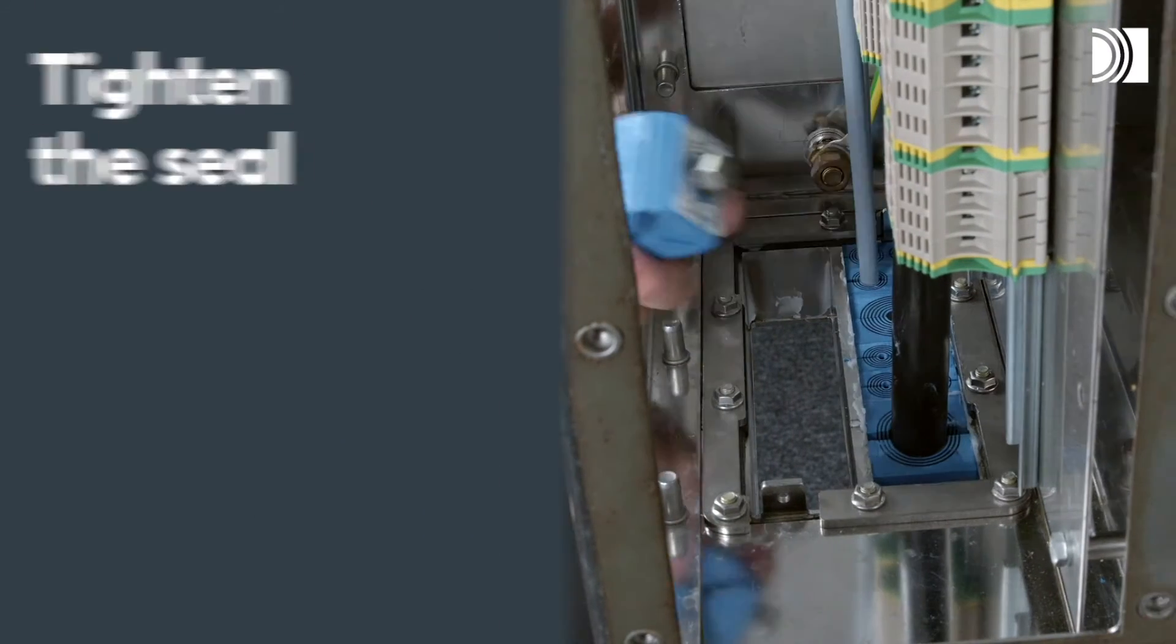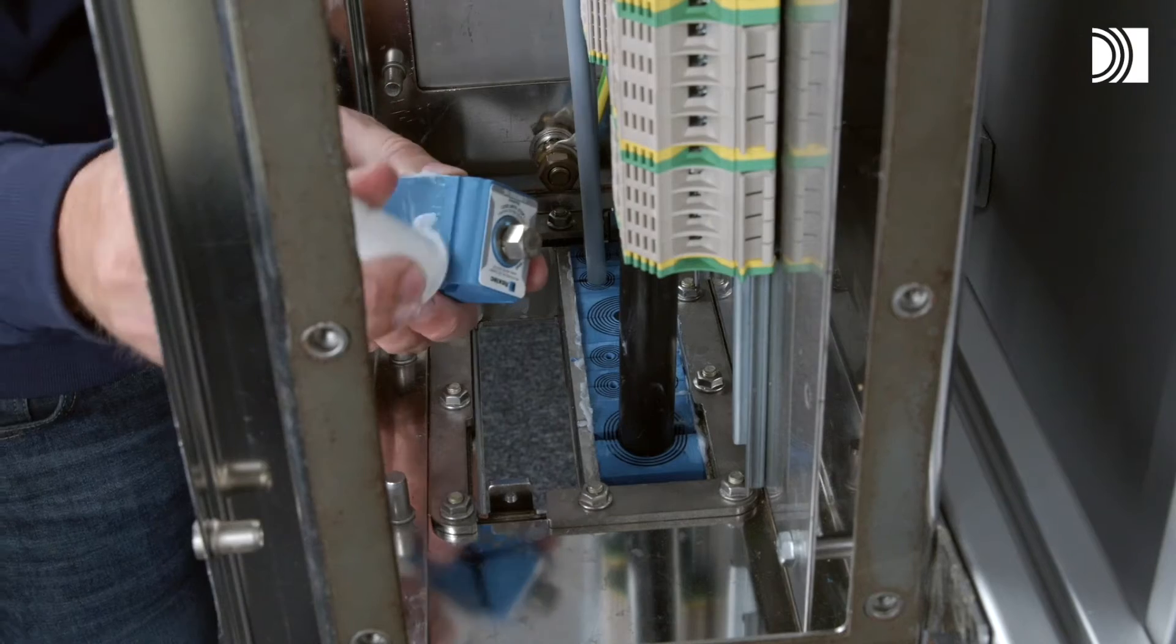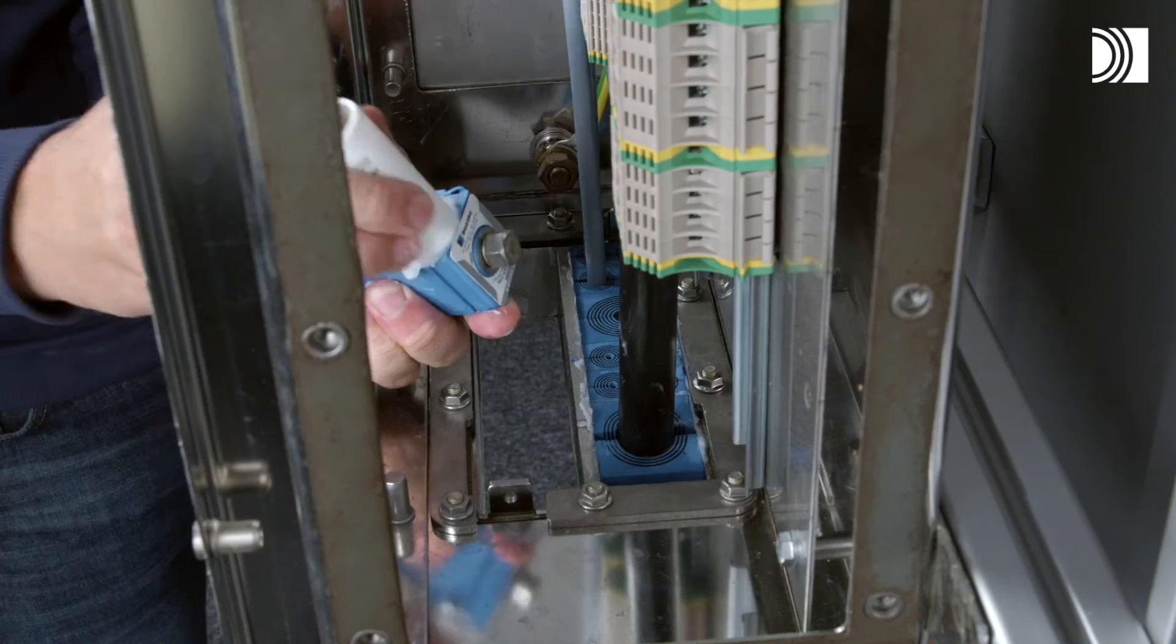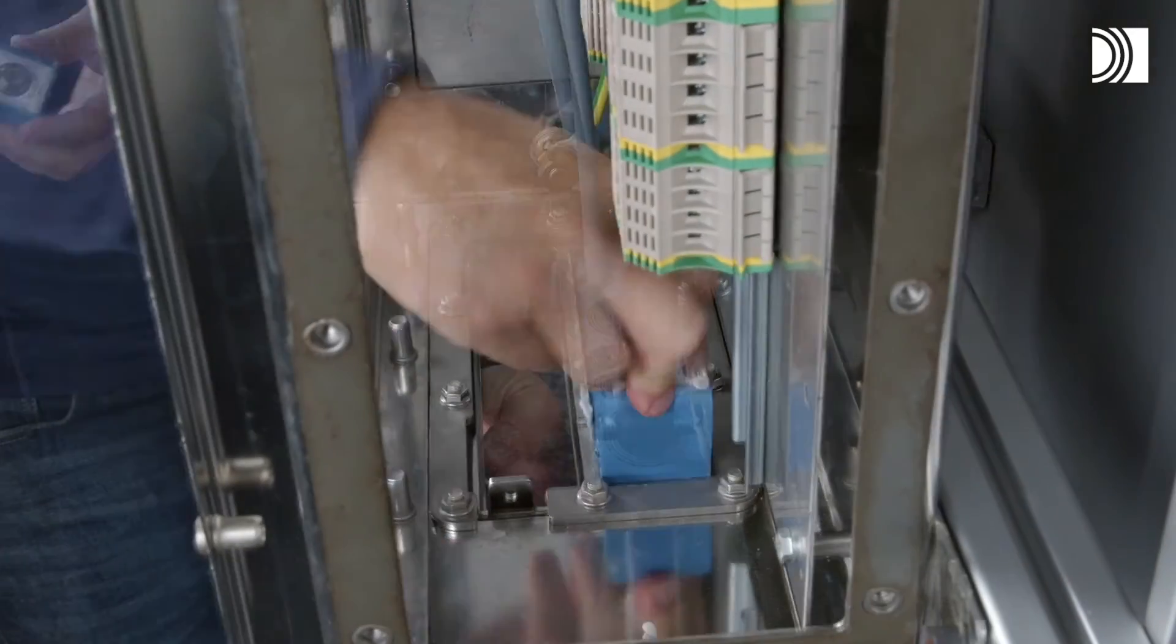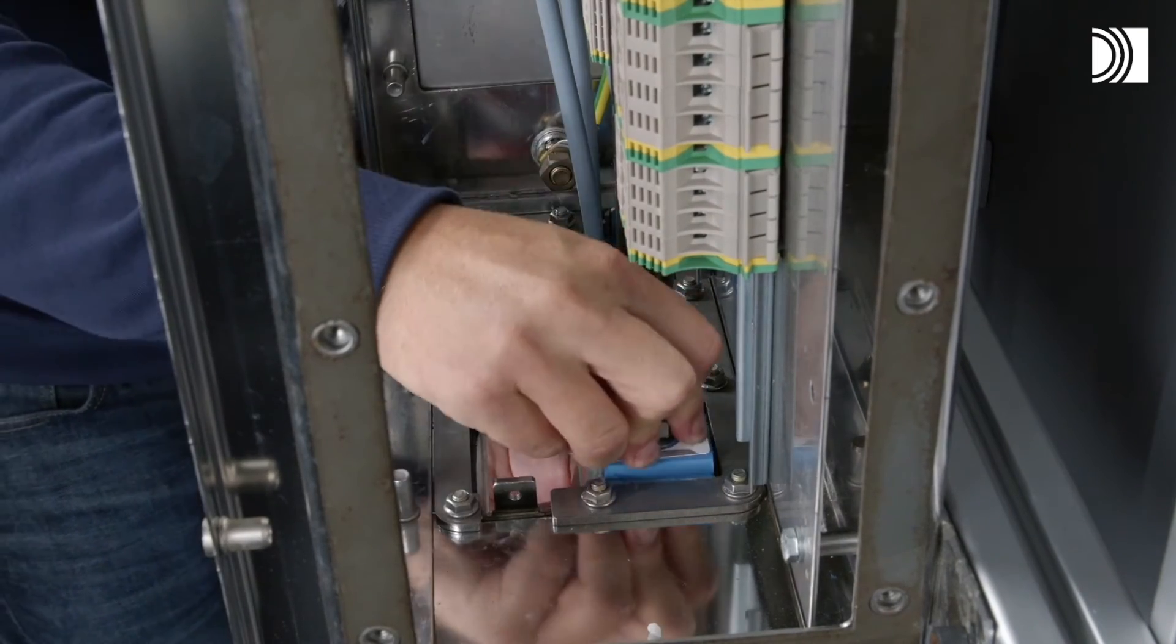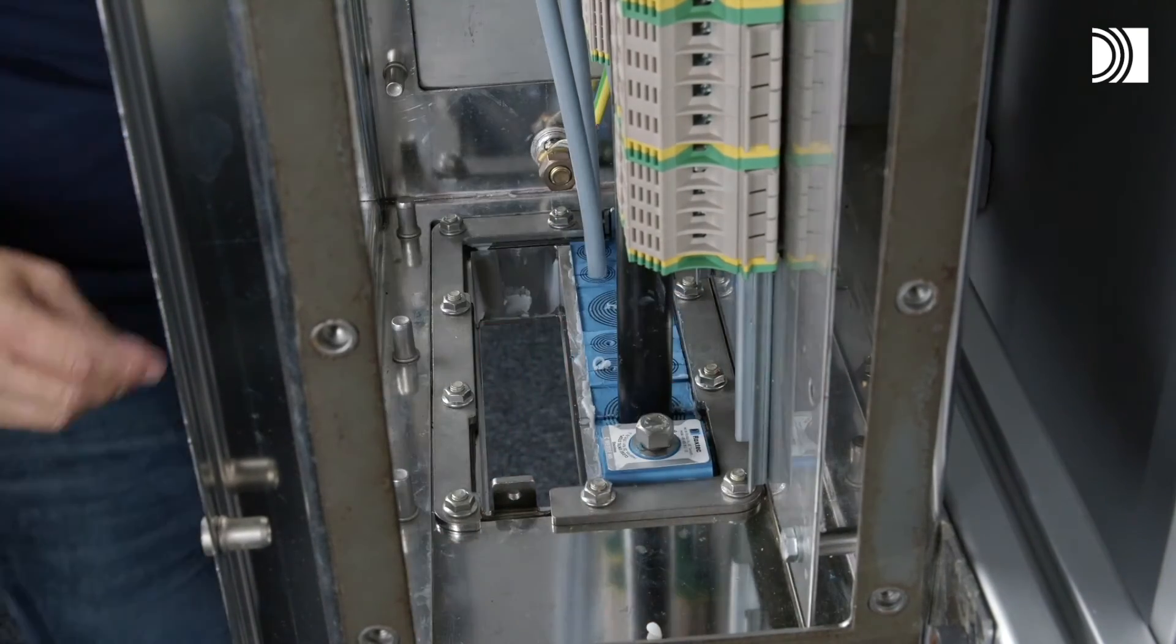Tighten the seal. Lubricate the compression units on all sealing sides. Insert the compression unit from the inside of the opening until stop. The compression units can be placed with the screw head facing either into or out of the opening.